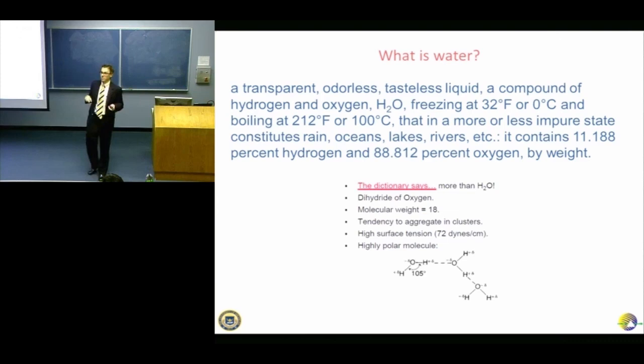Can somebody explain to the rest why the pH might be between 5 and 6? There's carbon dioxide in the air, and also some other things that dissolve in the water and reduce pH — that's why the pH of water is a little less than 7. Well, it depends what you mean by 'a little less.' If you go for between 5 and 6, it's more than 10 times less.